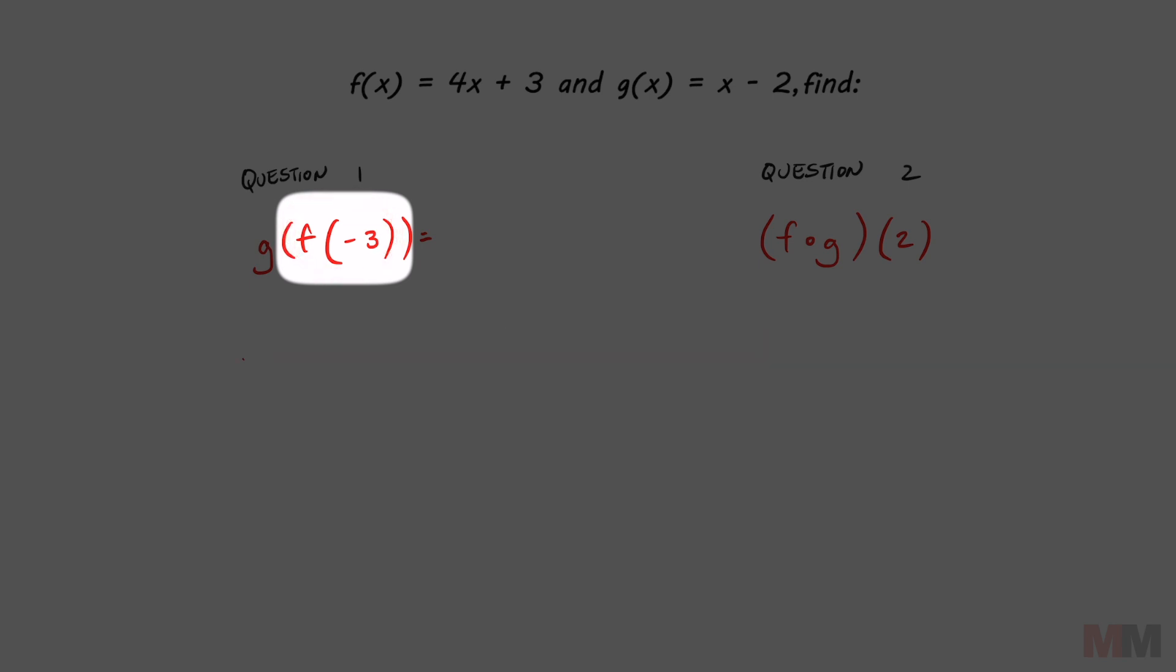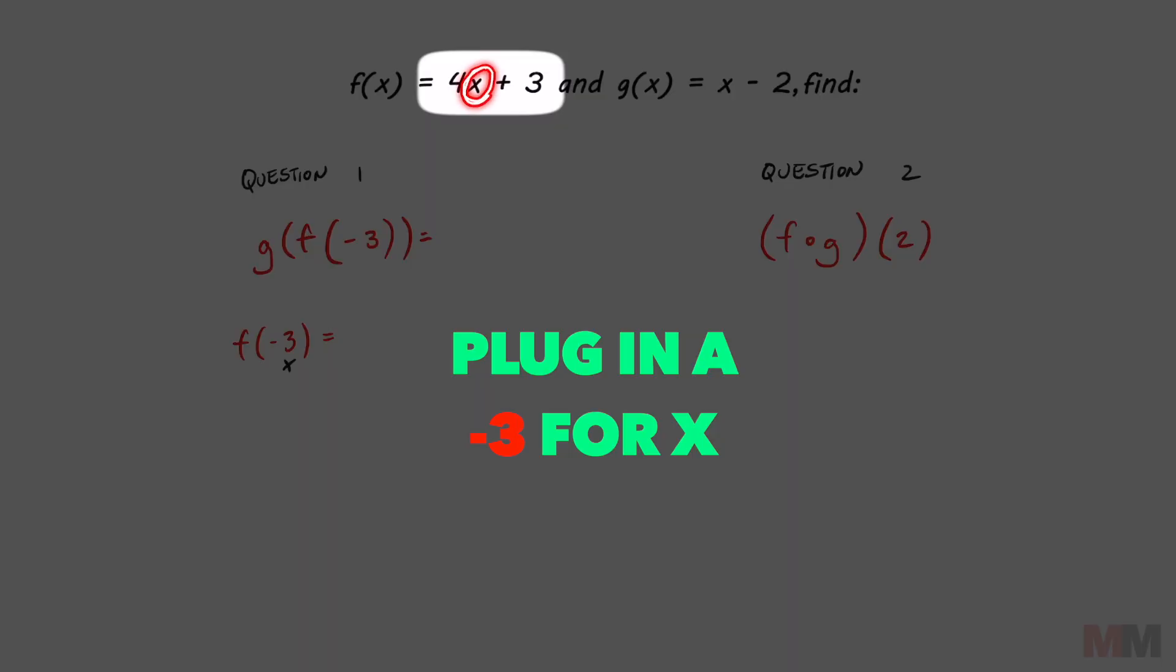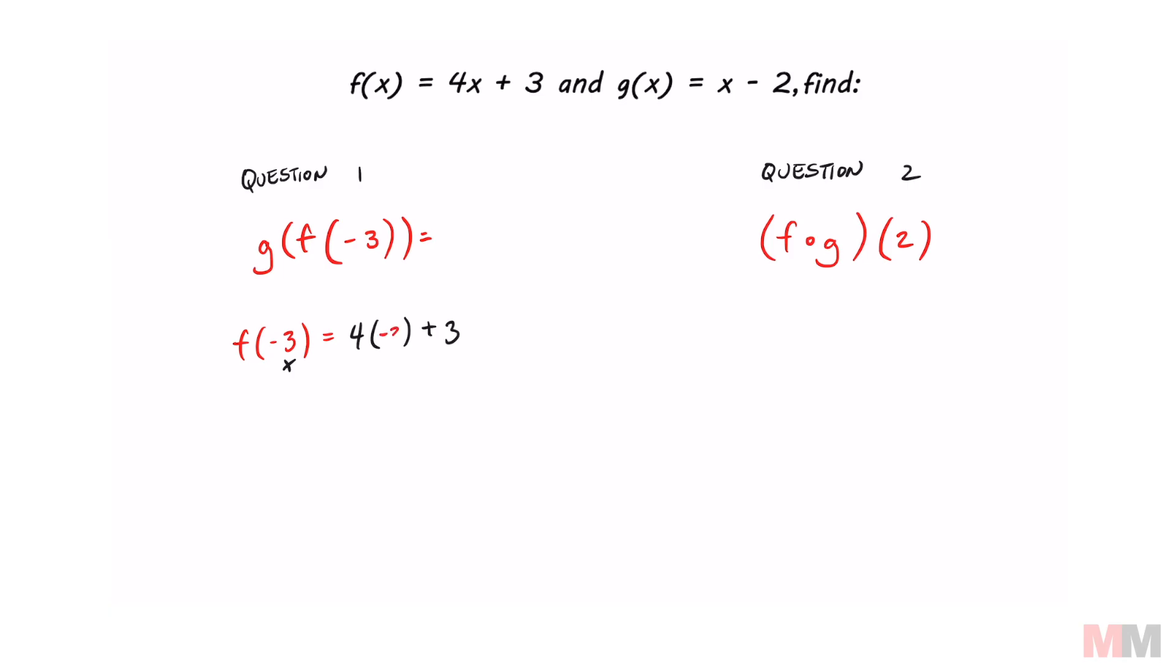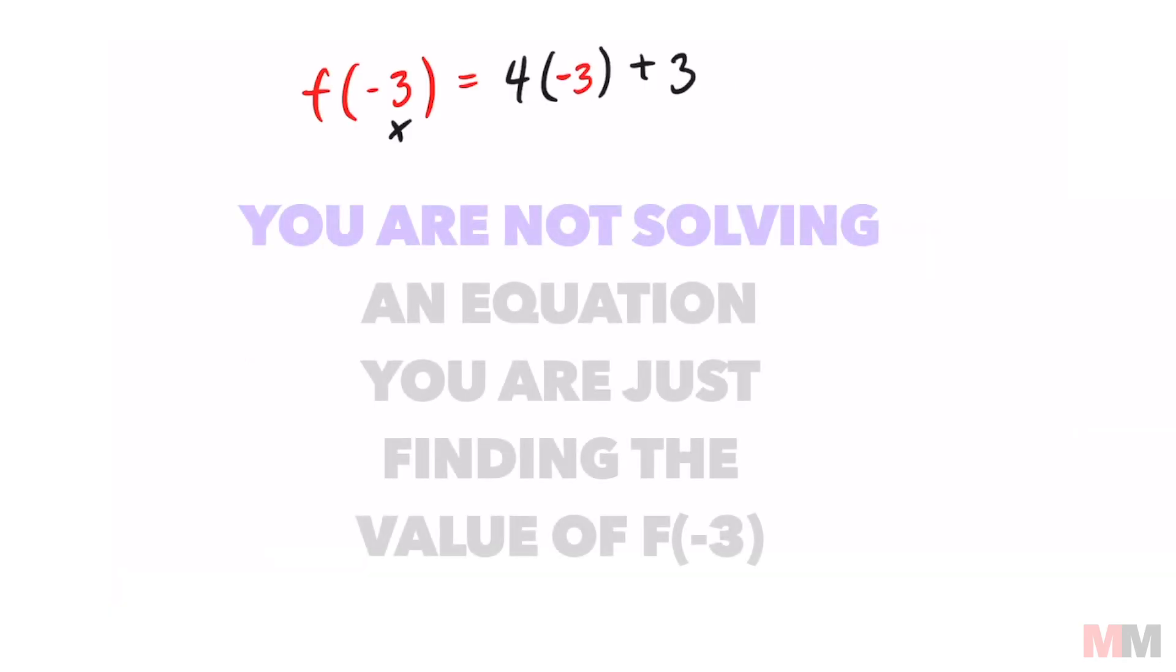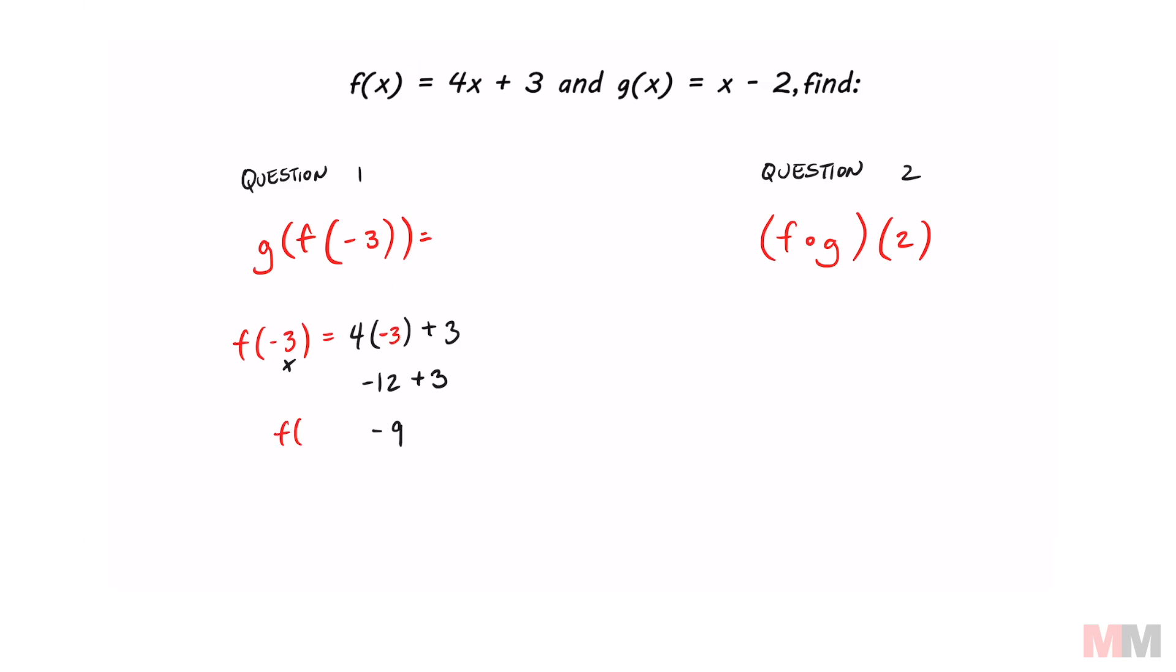So let's focus on f of negative three and find what that equals. This number right here is defined by this variable, so that really means that that's my x. That is my input that I'm going to plug in for this expression right here. We're going to replace that x with my input, which is negative three. And then go ahead and compute that. Four times negative three is negative twelve plus three, which then simplifies to negative nine. So f of negative three equals negative nine.